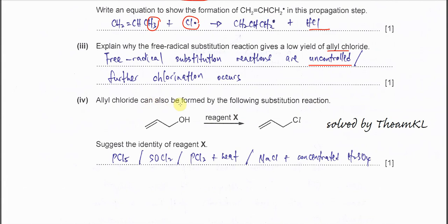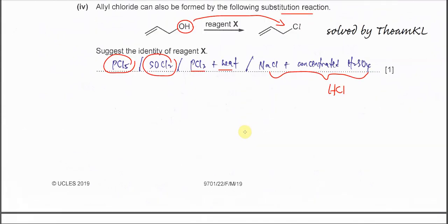Part B(iv). Allyl chloride can also form by the following substitution reaction. This is a substitution using compounds. We can use PCl5 at normal temperature, SOCl2, PCl3 with heat, or NaCl with concentrated H2SO4 because this will form HCl. Therefore the OH will be substituted by the chlorine.